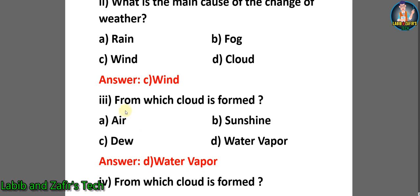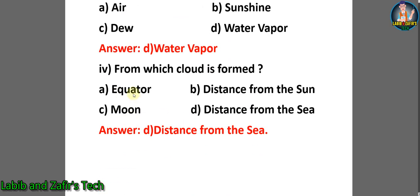Number three: from which is cloud formed? A) air, B) sunshine, C) dew, D) water vapor. The correct answer is D) water vapor. Number four's correct answer is D) distance from the sea.